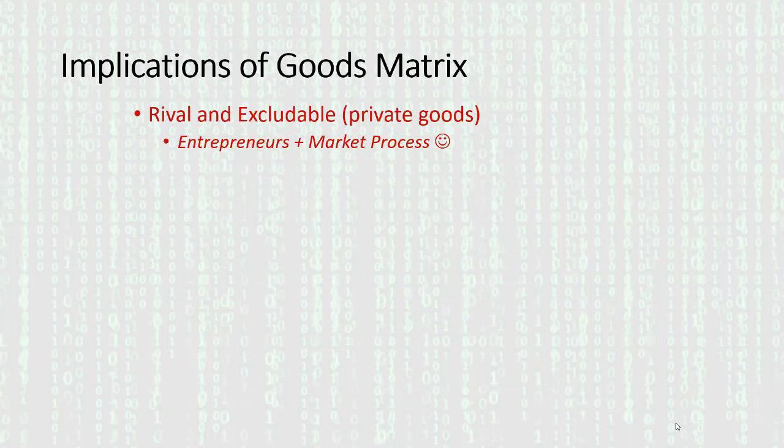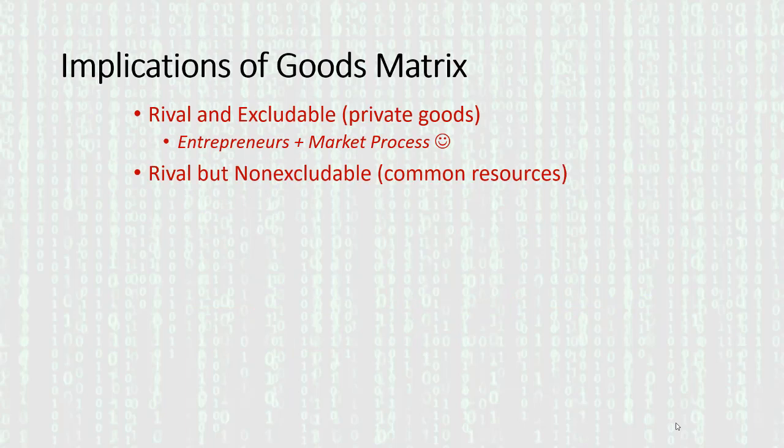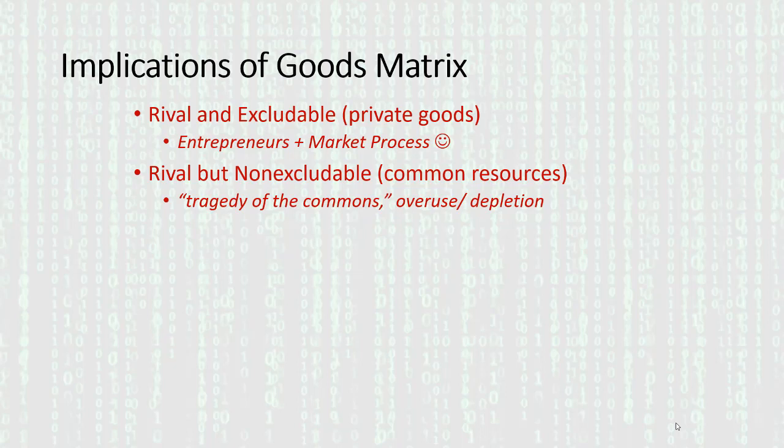Now we'll move on to goods that are rival but non-excludable — we call these common resources. With common resources, we get a problem known as the tragedy of the commons. Resources are subject to overuse or depletion because we can't keep out people who don't pay to use them; in other words, we can't force people to recognize the opportunity costs of using up these resources.